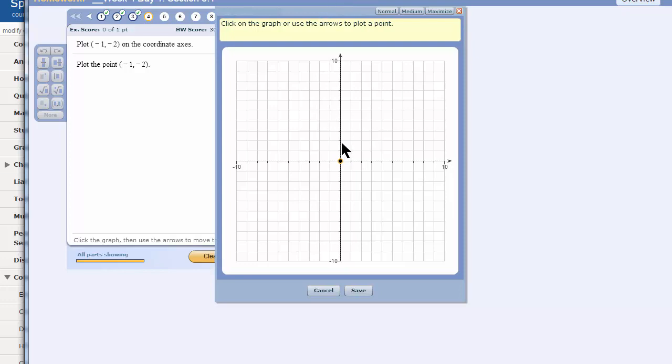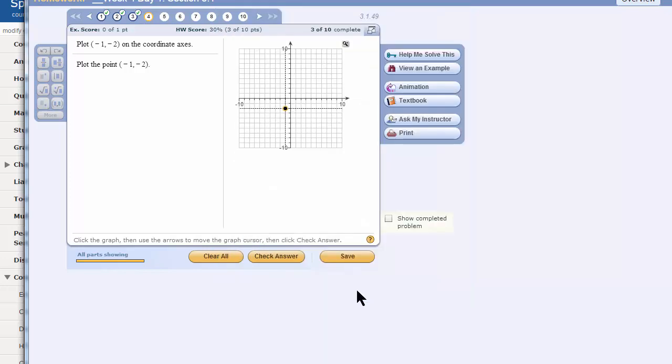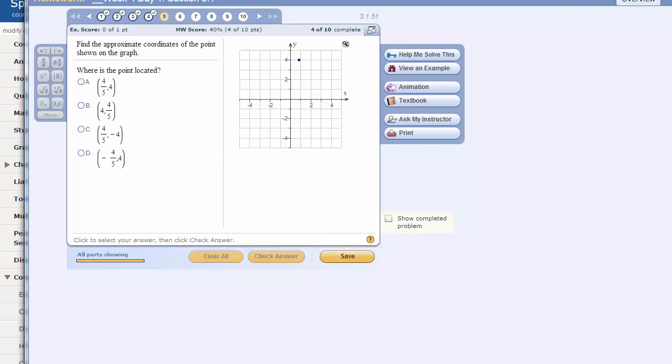So, I will drag and drop, after I make this bigger, I will drag and drop this point to the left 1, and then down 2. And that lines up with negative 1 on the x-axis and negative 2 on the y-axis. I save, and I check answer, and I'm told I did it right.